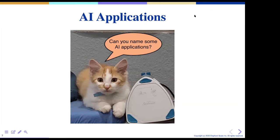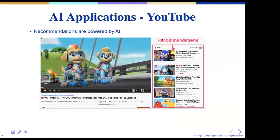You guys nailed most of this. Some of the AI applications — you guys named most of them. You guys watch plenty of YouTube, right? So here's my kids watching Paw Patrol, and YouTube is recommending what other episodes they might like. This is basically powered by AI developed by YouTube, and this is called recommendation. When you're watching a video, they recommend things for you to watch. Pretty nice, right?